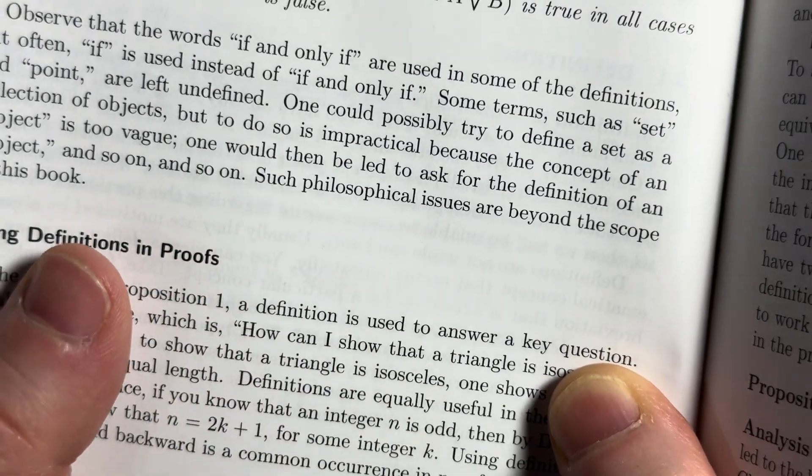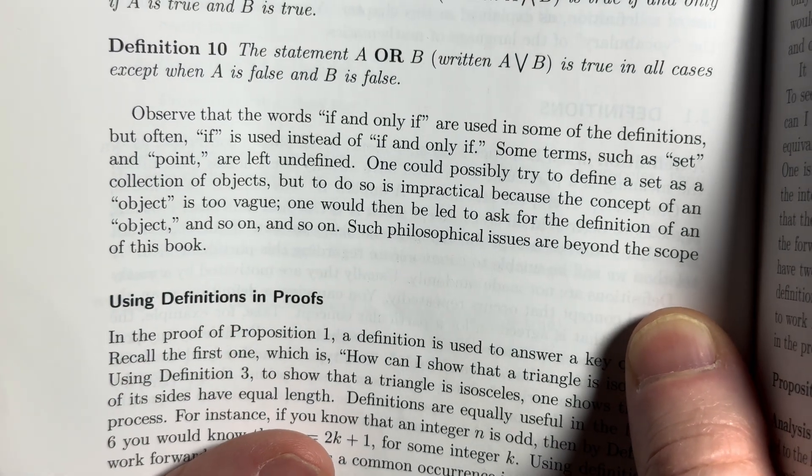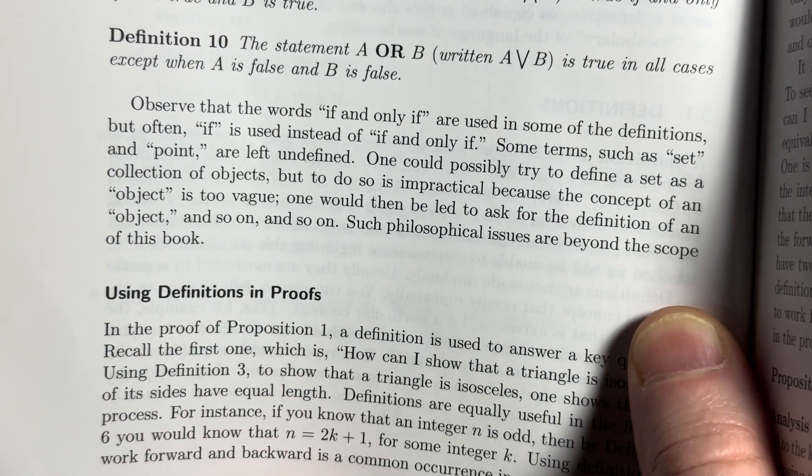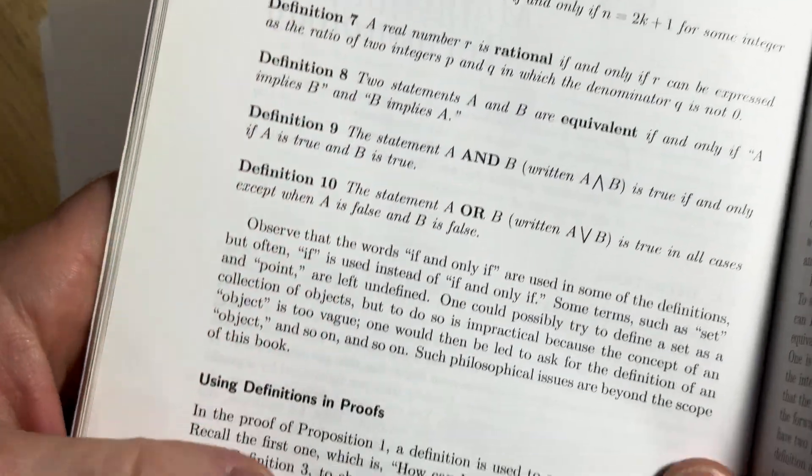Such philosophical issues are beyond the scope of this book. You can get into some things like that, that just really, I mean, personally, they're not that critical for progressing in mathematics. Here, it talks about using definitions and proofs.